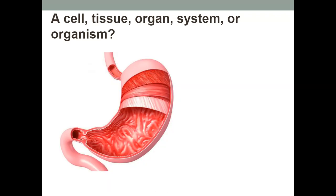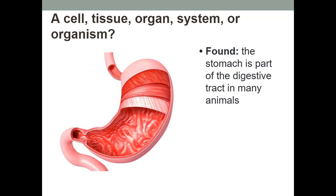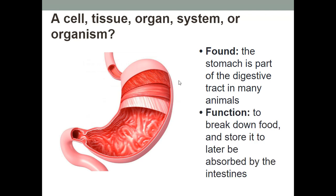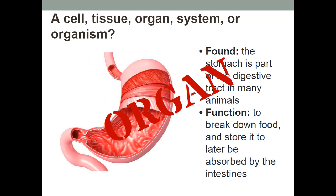Here is a stomach. The stomach is part of the digestive tract in many animals. You can see the different tissues of the stomach — there's some muscle tissue and others that make it up. Its function is to break down food and store it to be absorbed by the intestine. Would this be a cell, a tissue, an organ, an organ system, or an organism? If you said organ, you are correct.